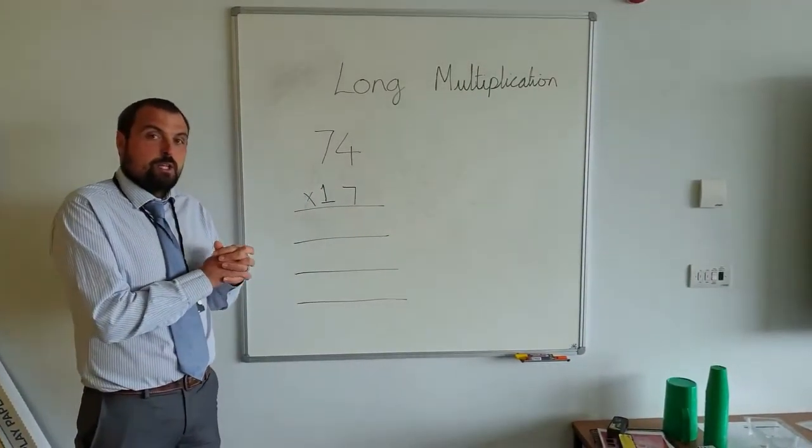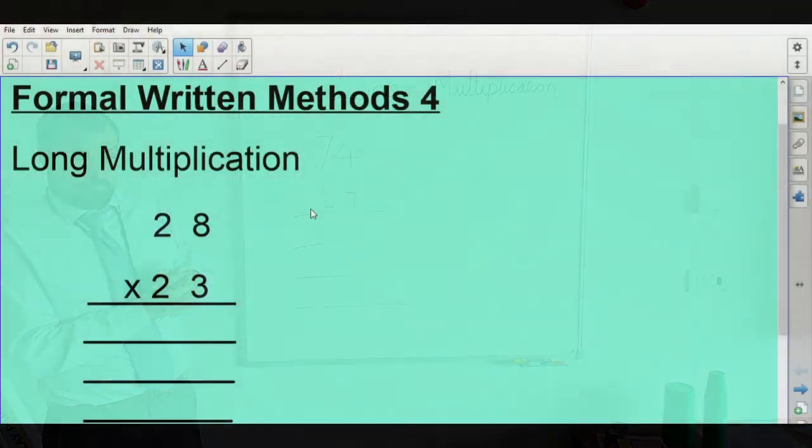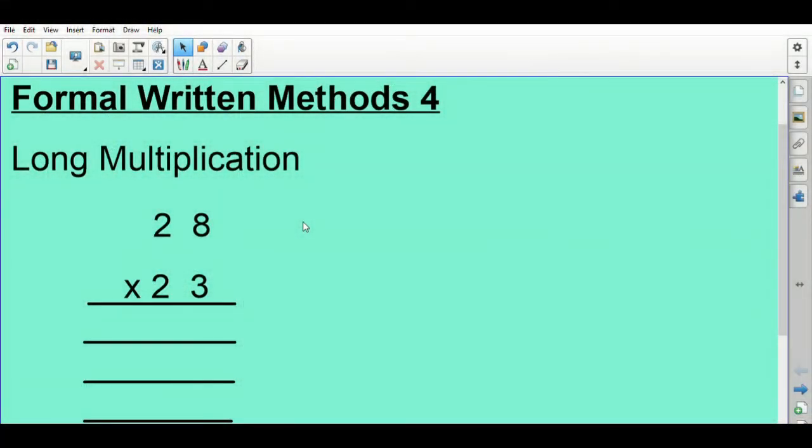Hi, this is the next in a series on the formal written methods. This is number four and this looks at long multiplication. So we've got an example here of a long multiplication. You can see how we start to set it out. We're going to go through it step by step. It's quite a complicated process, there's lots of different steps. It's trying to help understand each step and what we're doing and why we do it. So we're going to look and work through this calculation just here and show you the steps.